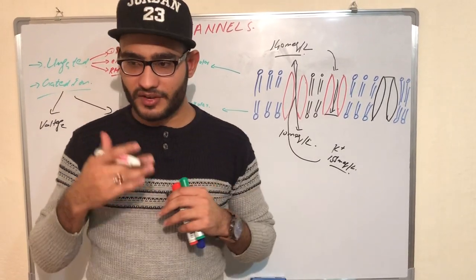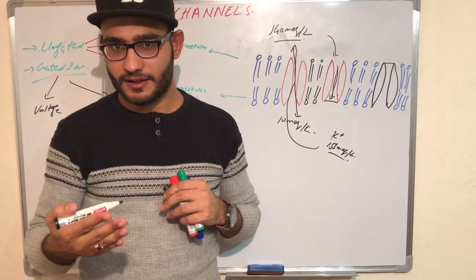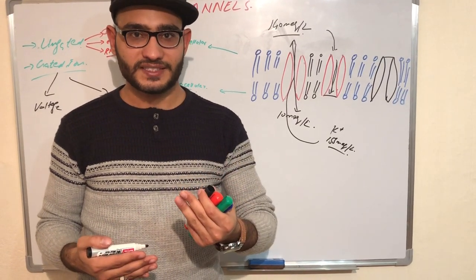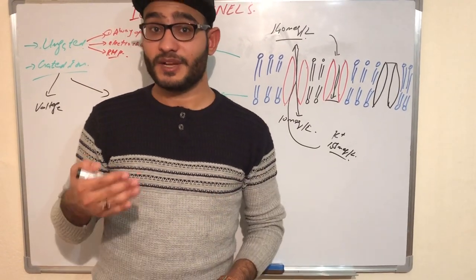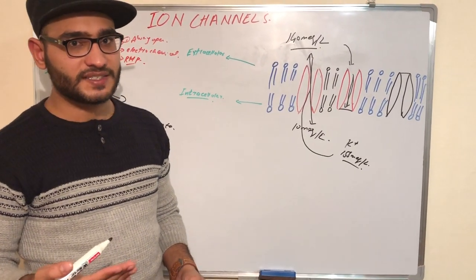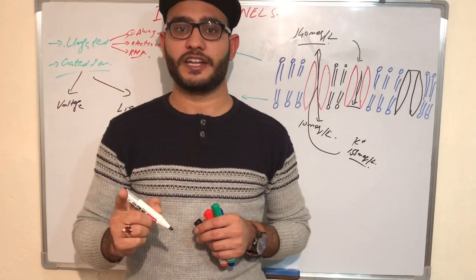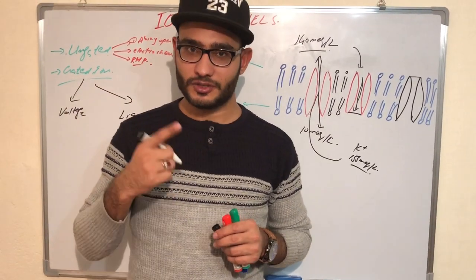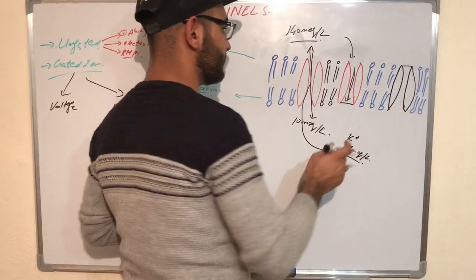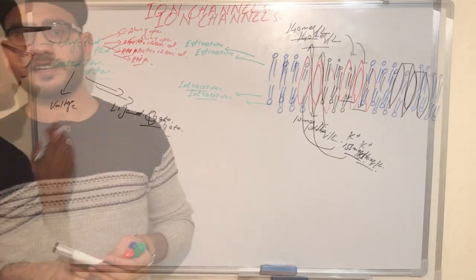Sodium has a specific voltage for entry into the cell, potassium has a specific voltage, and calcium has a specific voltage. Every ion has a specific voltage required for entry into the cell.